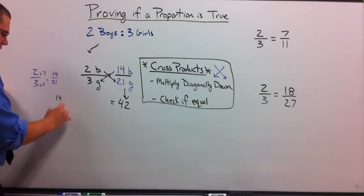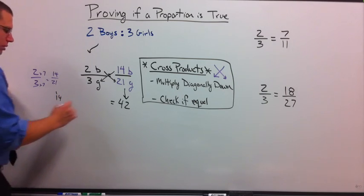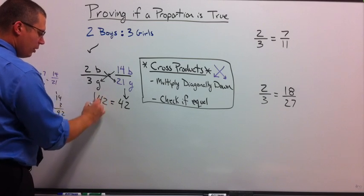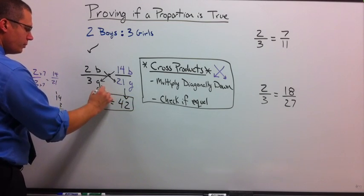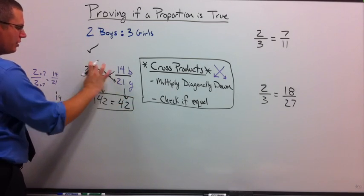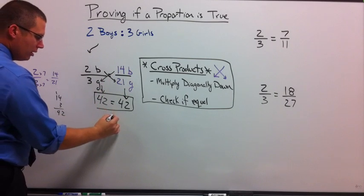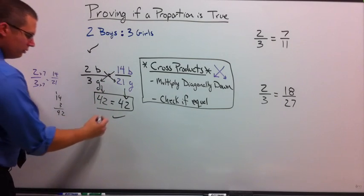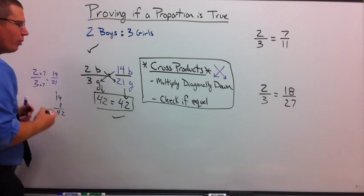Is that equal to 14 times 3? I'm pretty sure it probably is. Let's double check. 14 times 3 is 12 and 42. Put a box around it. And I prove that yes, this ratio is equal to this ratio. Done. Nothing else to do. 42 is equal to 42.